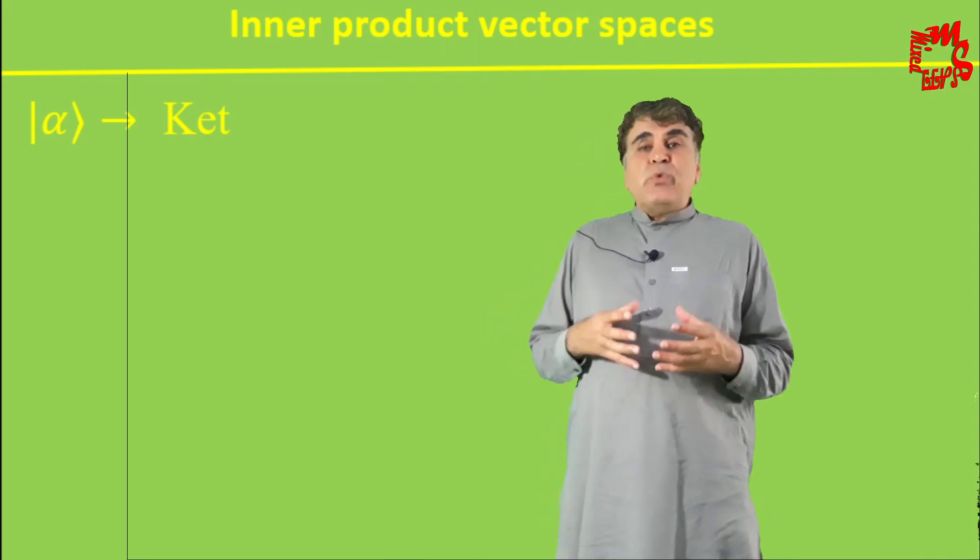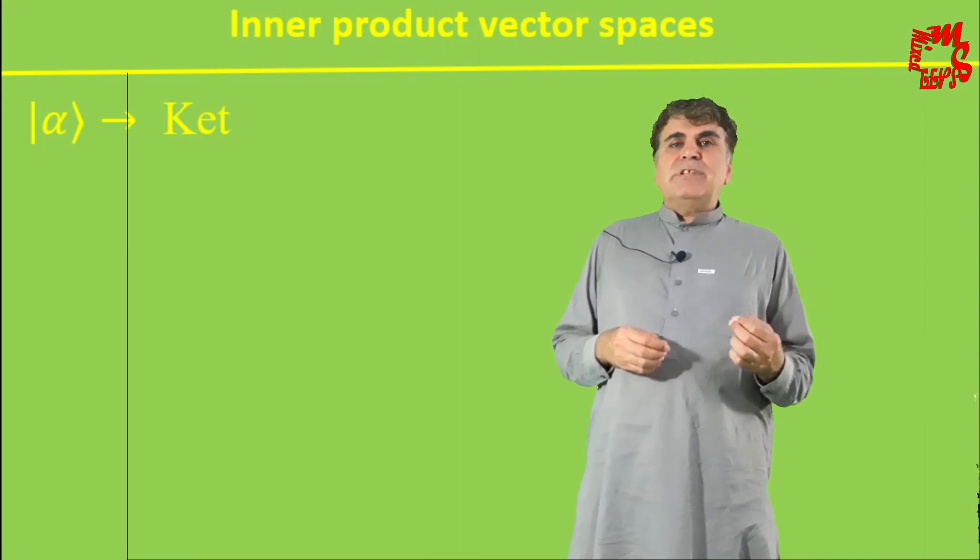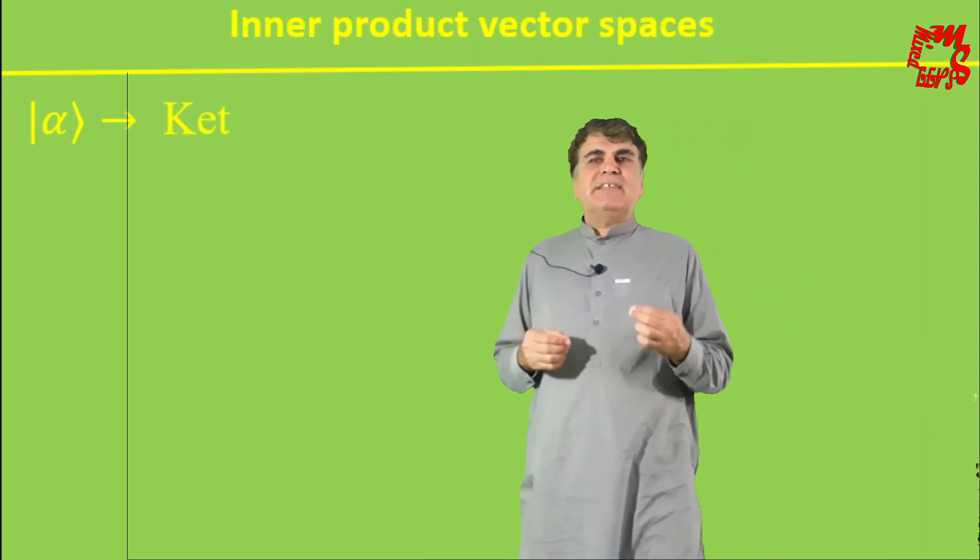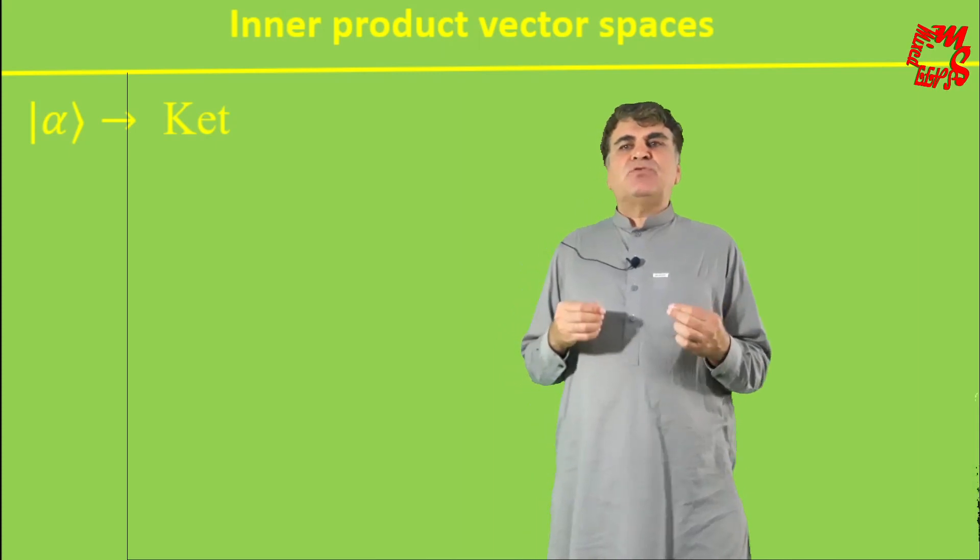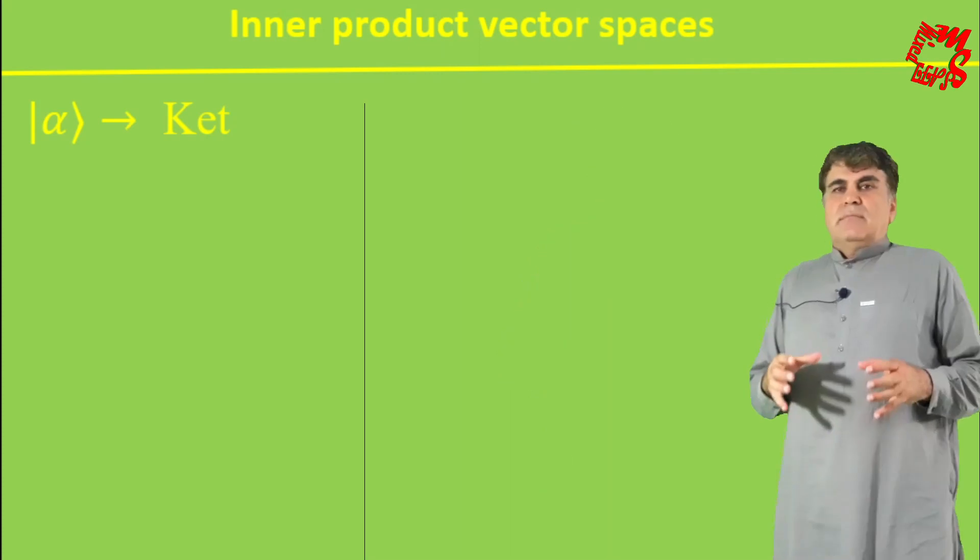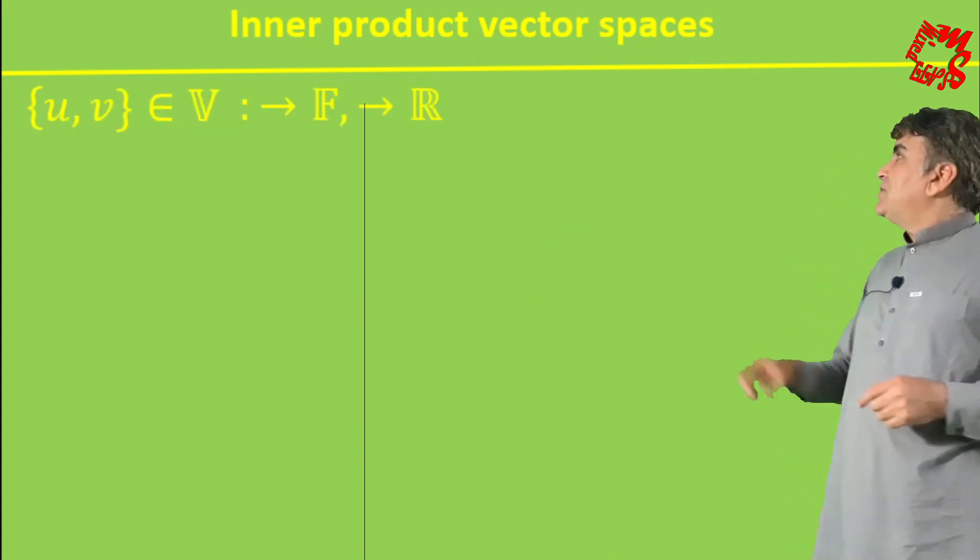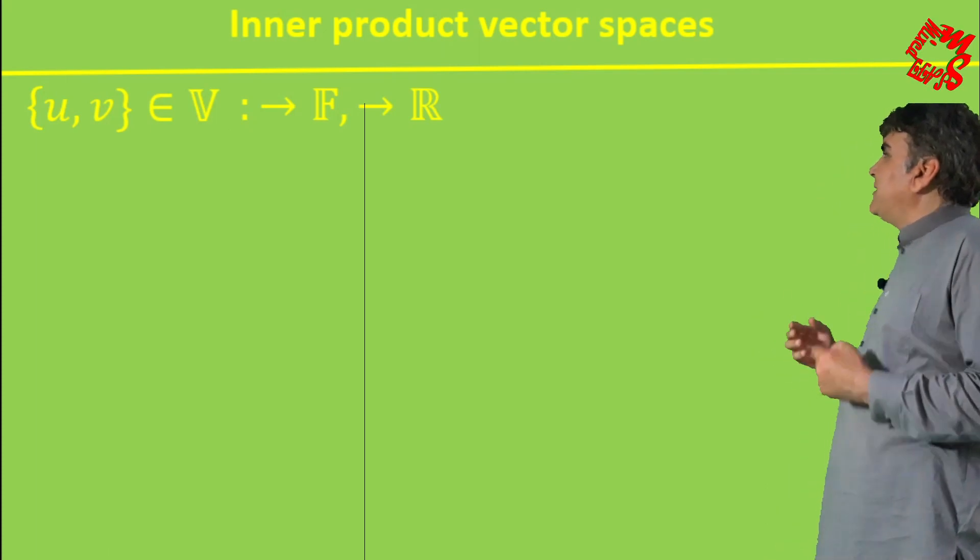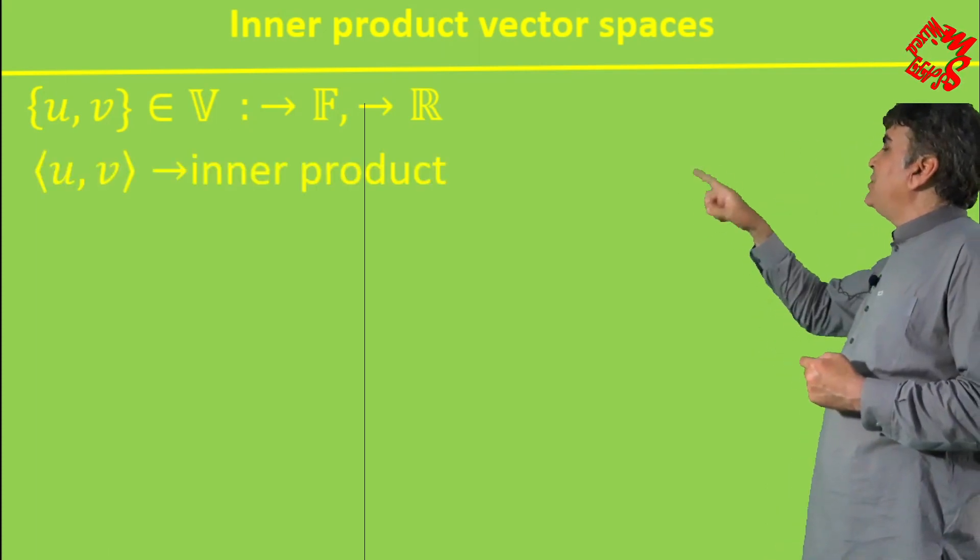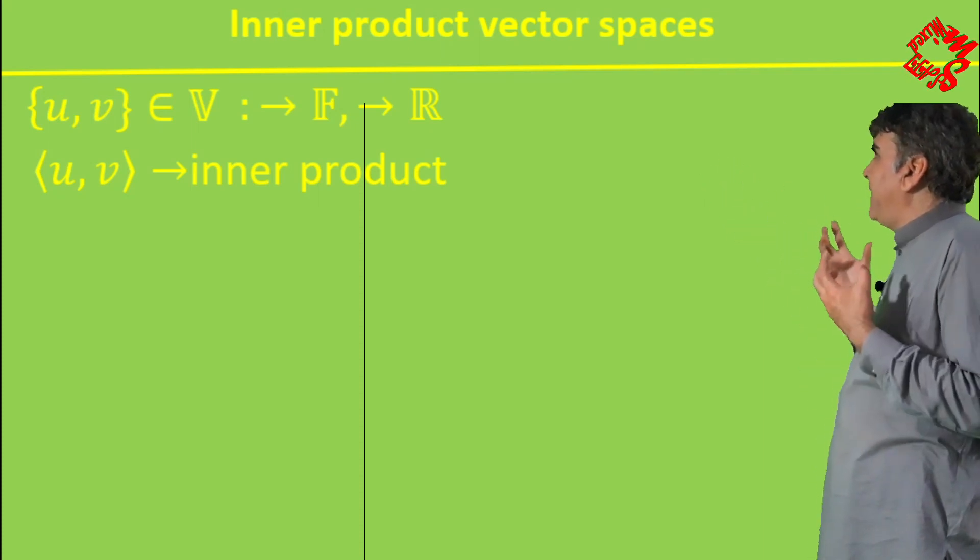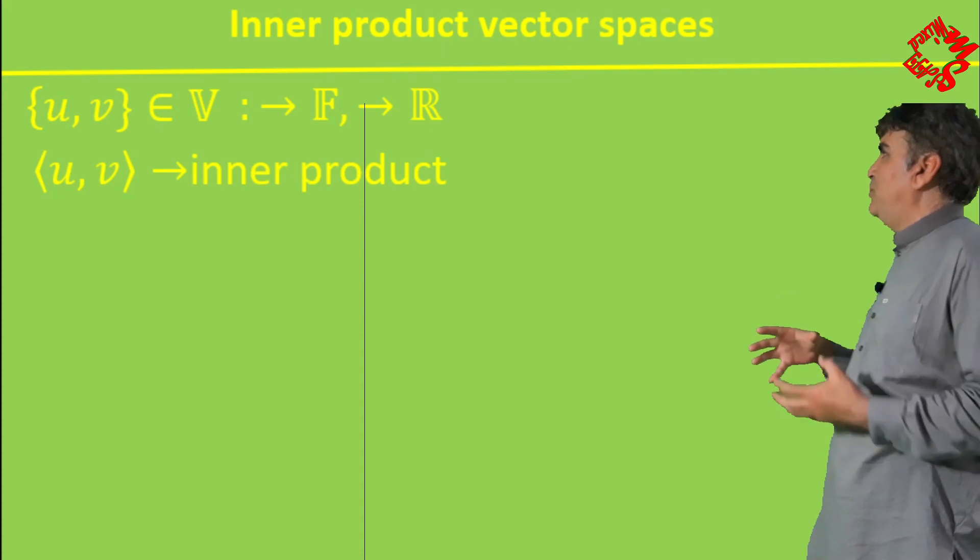For a vector space V over the field of real numbers, the inner product is in fact a function that takes a pair of elements of space V to a number belonging to the field F. That is, for two elements U and V belonging to V, the inner product is written as angle bracket U comma V angle bracket, and this possesses the following properties.